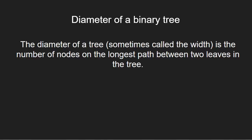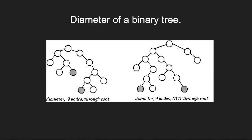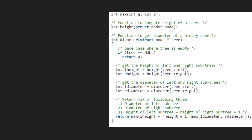Let us see an example. The diagram shows two trees each with diameter 9. The leaves that form the end of a longest path are shaded. Now let us see the algorithm which will assist us in finding the diameter of a binary tree. Let us also have a sample tree to test our algorithm.